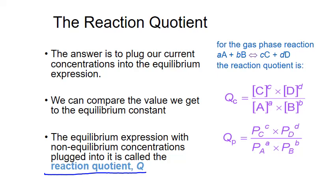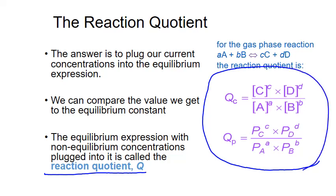We can compare the value of Q we calculate to the value of K, our equilibrium constant, to determine whether we need to produce more reactant or more product to reach our equilibrium steady state. The expression for the reaction quotient Q is the same as the expression for the equilibrium constant K. The big difference is that Q can be calculated with any concentrations, whether they're equilibrium or not, so Q can have any value. In contrast, K is only calculated using equilibrium concentrations, and as a result should always have the same value.